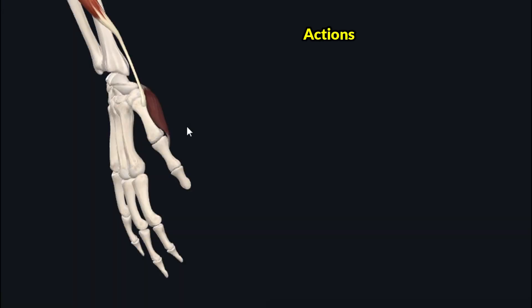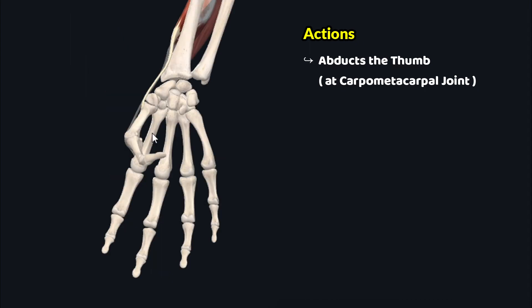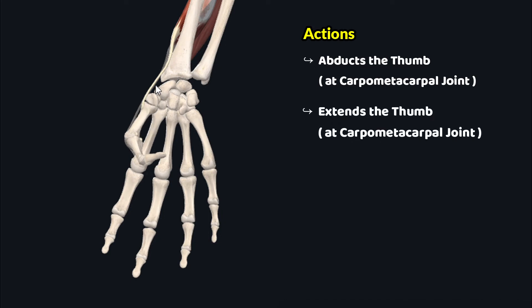This muscle produces two important movements at the carpometacarpal joint. The first movement is very clear from the name: abductor pollicis. The word abductor means this muscle is an abductor, and pollicis refers to the thumb, so this muscle abducts the thumb at the carpometacarpal joint. The second movement this muscle produces is extension of the thumb at the carpometacarpal joint.